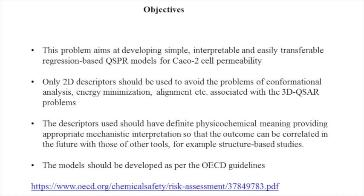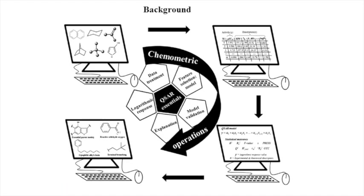The models should be developed as per the OECD guidelines. QSPR, or Quantitative Structure Property Relationship, is basically a ligand-based approach which starts from appropriate molecular structure representation, from which a set of descriptors can be generated, subjected to feature selection tools to extract important features. An appropriate regression-based algorithm can then be used to develop the model, which can be validated using different metrics and interpreted for the design of new compounds.